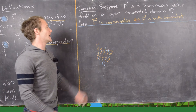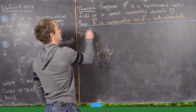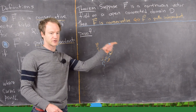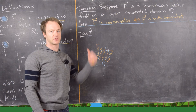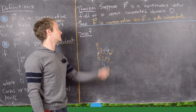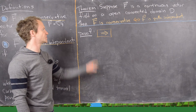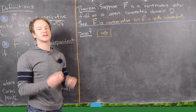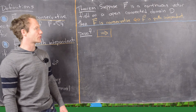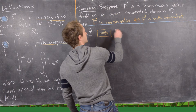Since this is an if-and-only-if statement, we have two things to prove: a forward direction and a reverse direction. For the forward direction, we are going to assume that F is conservative and then prove that F is path independent.